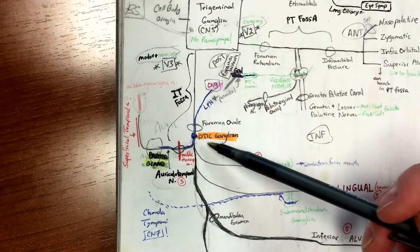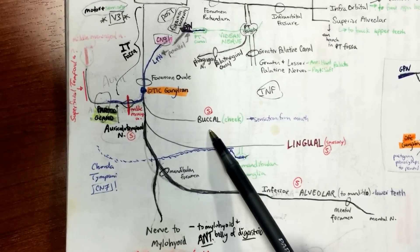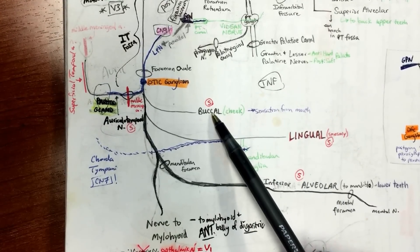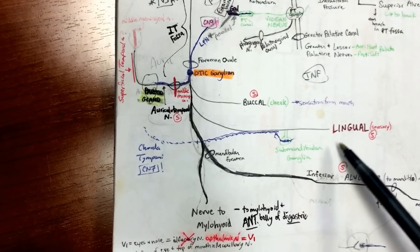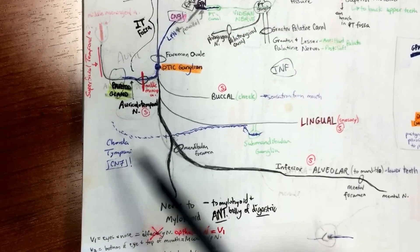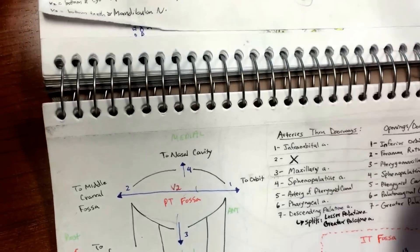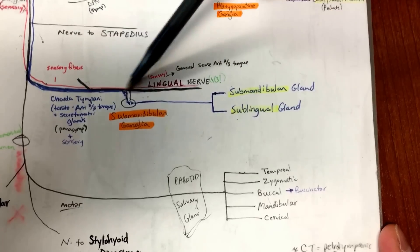Moving on, the next branch is the buccal nerve — going to the cheek, providing sensation from the mouth. Then moving down the face we give off the lingual branch. What nerve is associated and hitches a ride on the lingual nerve? Chorda tympani of CN7. And what ganglion is hanging off the lingual nerve? The submandibular ganglion. So: cranial nerve 7's chorda tympani jumps on the lingual nerve, and the submandibular ganglion hangs off it.